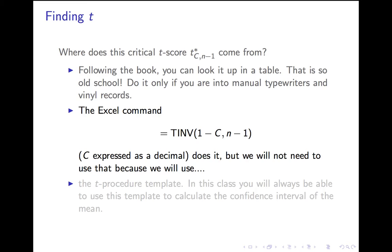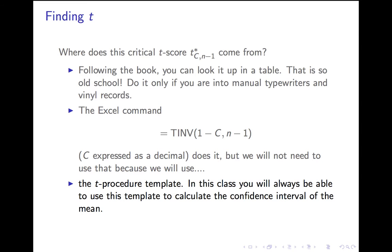You have to tell Excel your confidence level, but it doesn't want to hear 0.95 — it wants 1 minus the confidence level, 0.05. And you give it the degrees of freedom, not the sample size, which is the sample size minus 1. In this class, you'll always be able to use the template to calculate the confidence interval for the mean, so you'll never have to calculate T.INV directly. I'll show you how to do that in a moment.